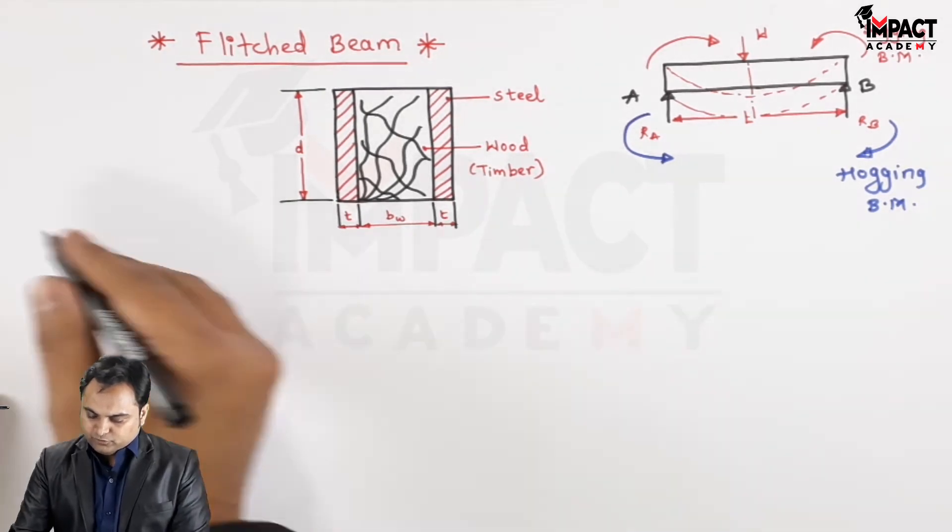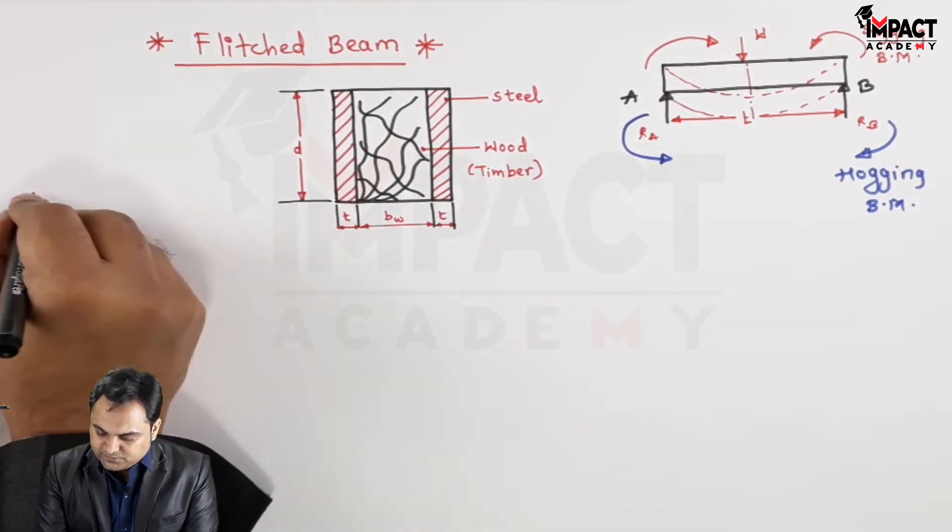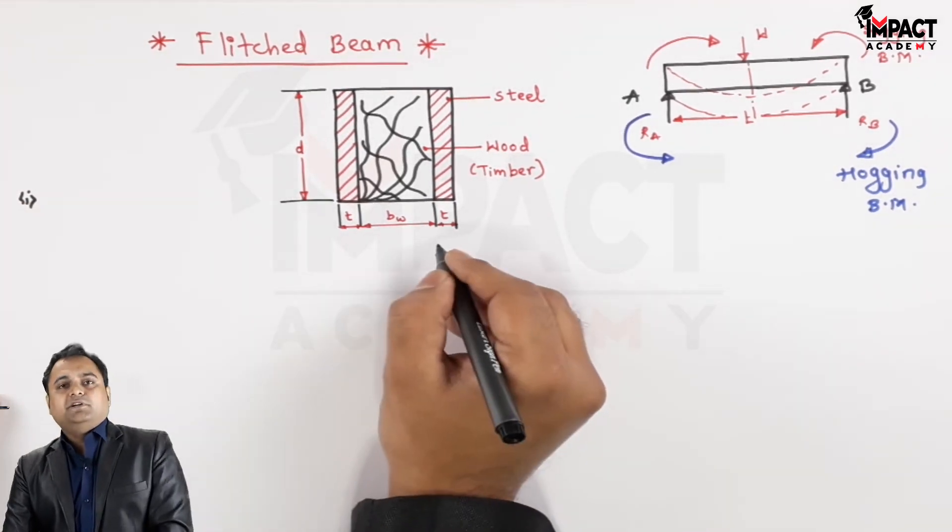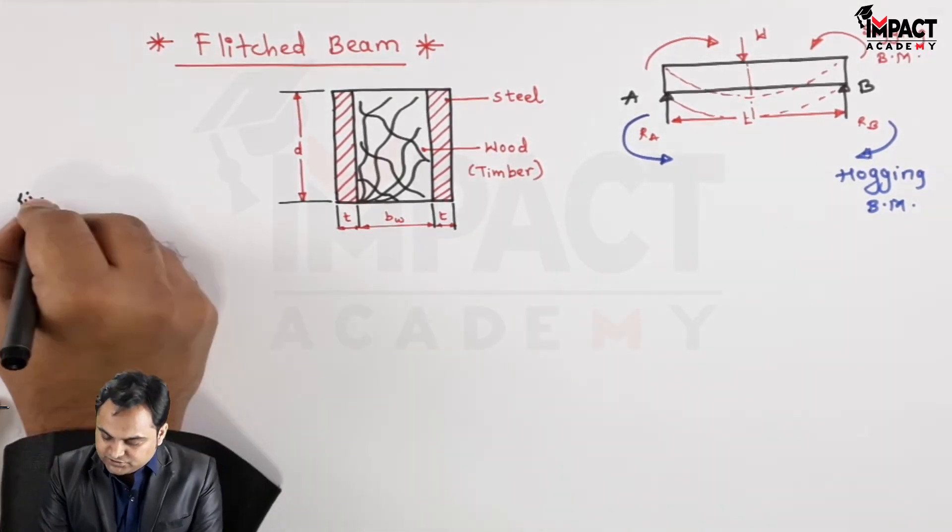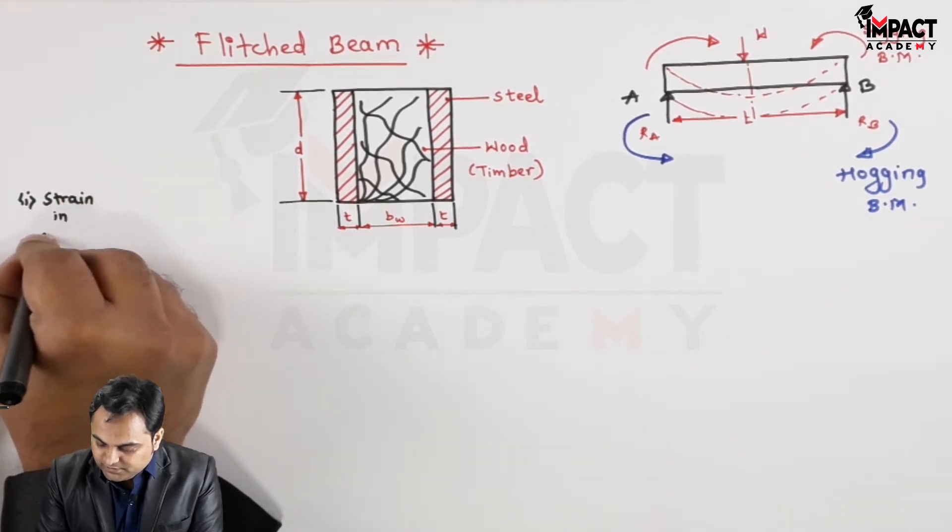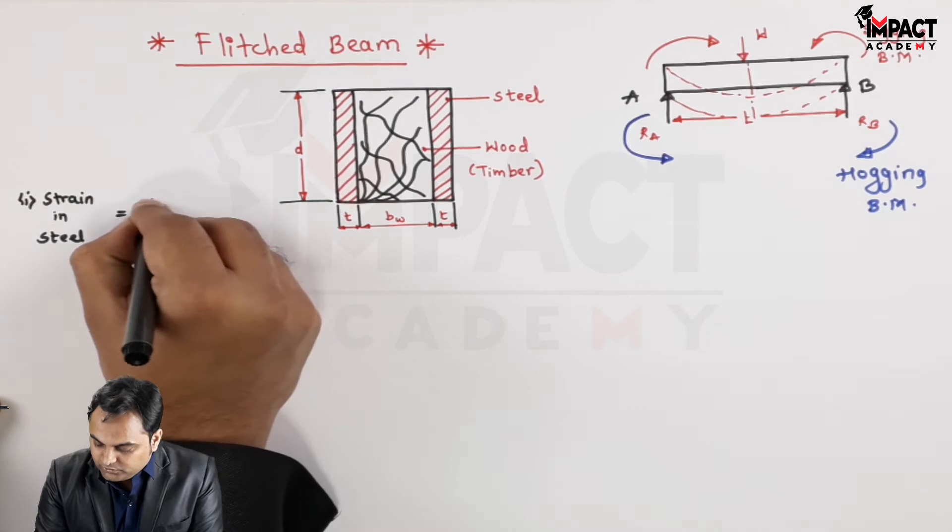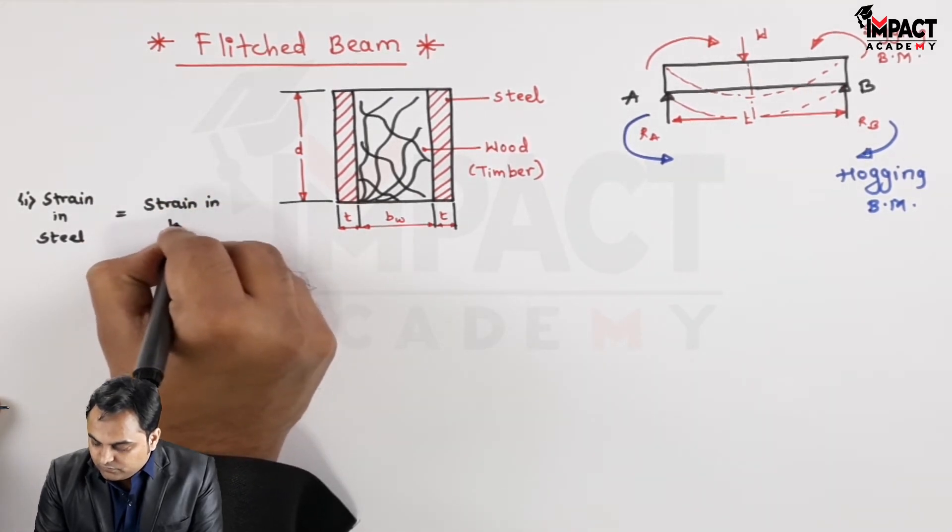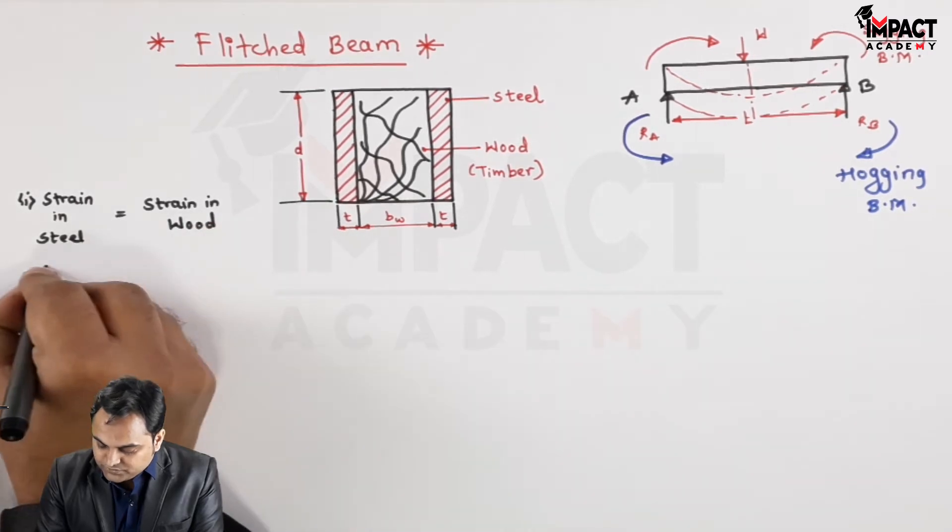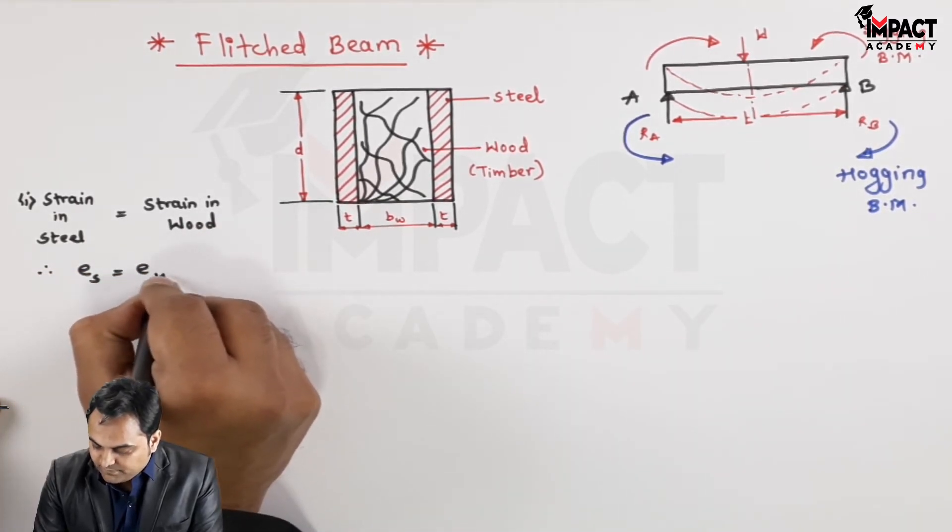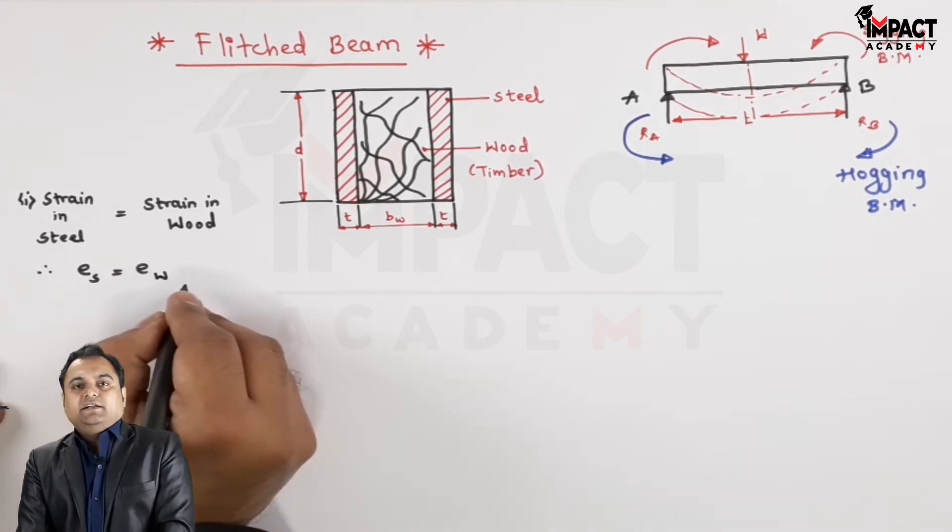Here, one thing we have to remember, that in case of flitched beams, the strain in both the materials are same. That is, strain in steel is equal to strain in wood or timber. Strain is denoted by small e. In steel I'm adding the suffix s for steel, and w for wood.